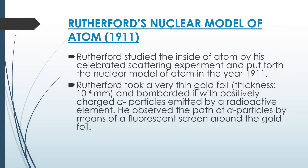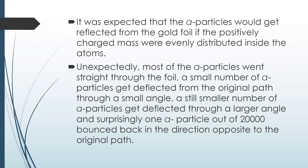The next theory is Rutherford's nuclear model of atom, given in 1911. Rutherford studied the inside of the atom by his celebrated scattering experiment. He took a very thin gold foil of thickness 10 raised to power minus 4 mm and bombarded it with positively charged alpha particles emitted by a radioactive element. He observed the path of alpha particles by means of a fluorescent screen around the gold foil. It was expected that the alpha particles would get reflected from the gold foil if the positively charged mass were evenly distributed inside the atoms.